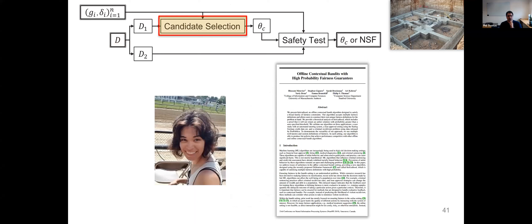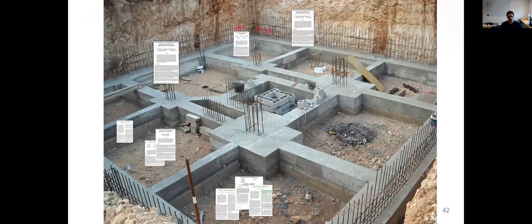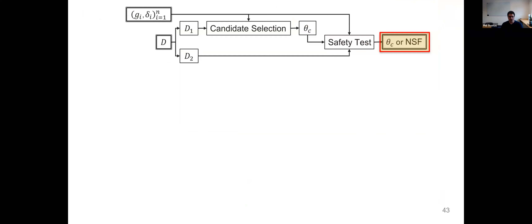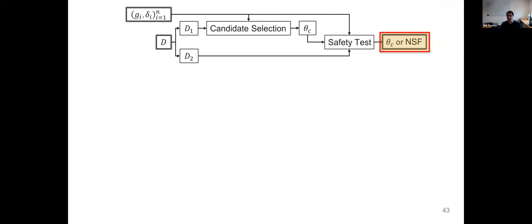There's a neat result from the fairness-in-RL paper showing that if a fair solution exists, in the limit as we get infinite data, we will be able to find and return it. We have some papers scattered around this landscape of Seldonian algorithms, with so much more room for improvement.